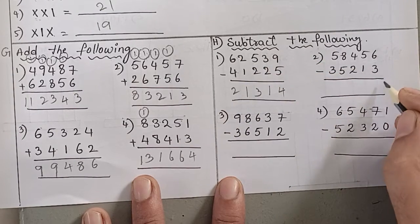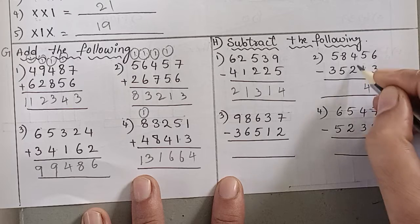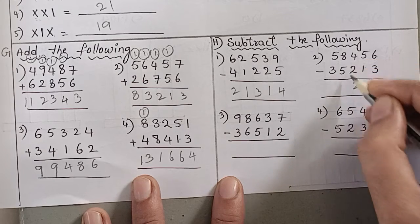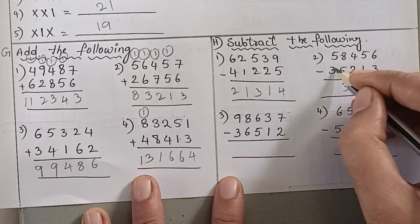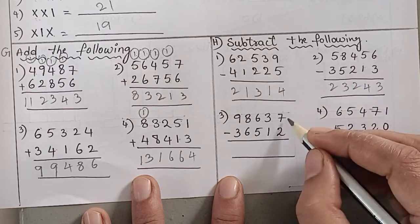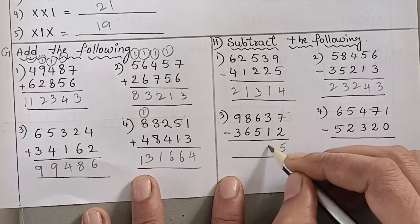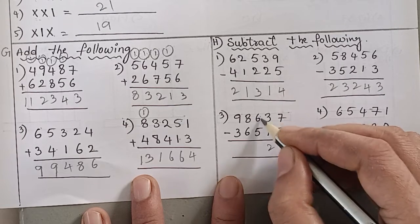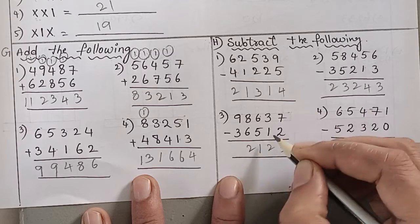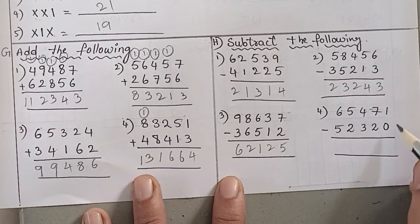Next subtraction: six minus three is three. Five minus one is four. Four minus two is two. Eight minus five is three. Five minus three is two. Seven minus two is five. Three minus one is two. Six minus five is one. Eight minus six is two. Nine minus three is six.